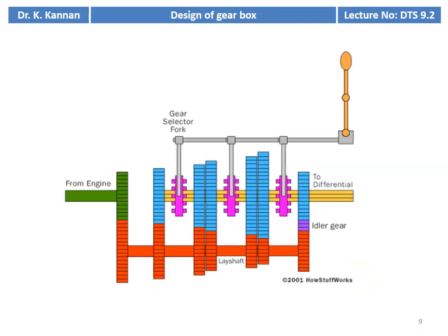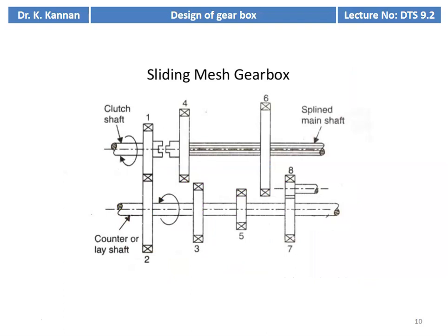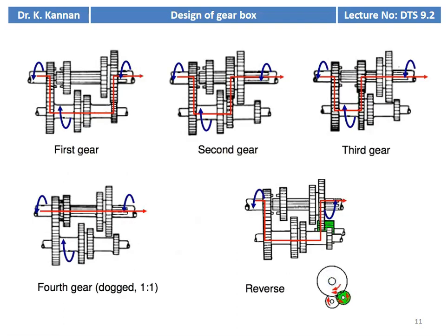This is another gearbox and a line diagram of the sliding mesh gearbox. The gear which is sliding is on the shaft; by shifting the gear and engaging with various gears, we will get different output speeds. This shows the four output speed and reverse gear arrangement — the meshing of first gear, second gear, and reverse gear arrangement for getting the output speed.